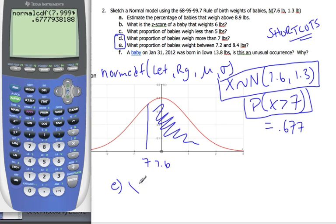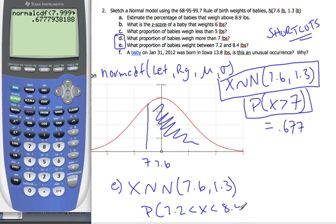Okay, so I know that X is a normal, and it is going from 7.6 is my mean, standard deviation 1.3. I want to find the probability that I am between 7.2 less than X, less than 8.4. Go to my calculator.